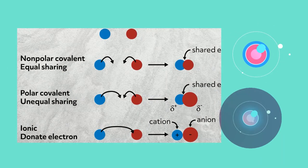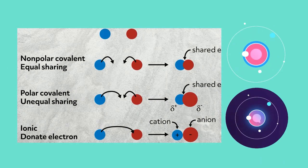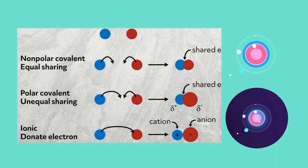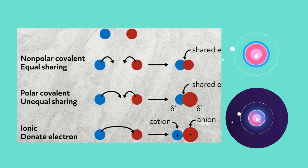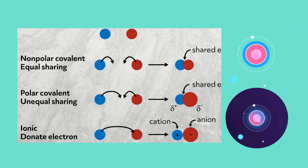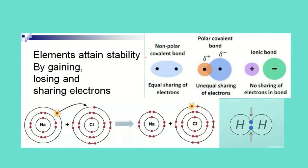Therefore, atoms can attain stability by: non-polar covalent bond (equal sharing of electrons), polar covalent bond (unequal sharing of electrons), ionic bonding (loss of electrons forms cations or positively charged ions; gain of electrons forms anions or negatively charged ions). Therefore we can say that elements attain stability by gaining, losing, and sharing electrons.